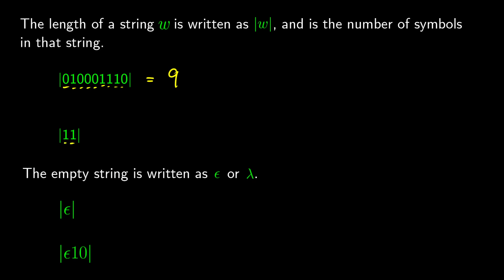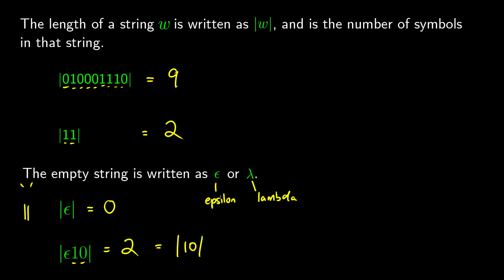Or if we just have the string 1, 1, we have two things there, so the length is 2. We also have an empty string — a string that has nothing in it. In some texts you'll see this written as epsilon, and in others as lambda; this video series will switch between both. The length of the empty string on its own is 0. If we see epsilon alongside other letters like 1 and 0, we don't count it, so epsilon-1-0 still has a length of 2.